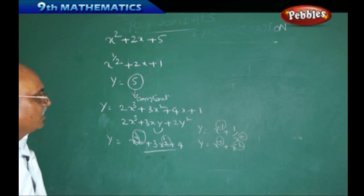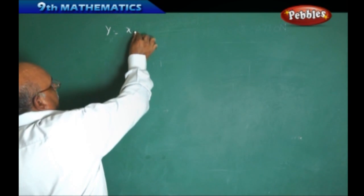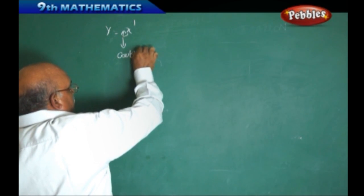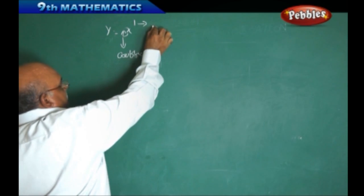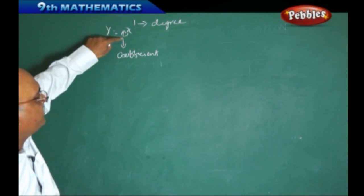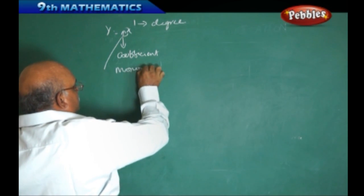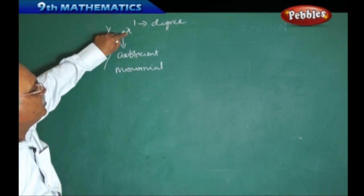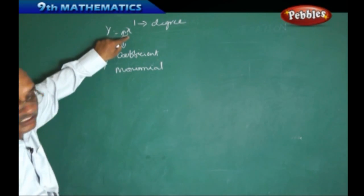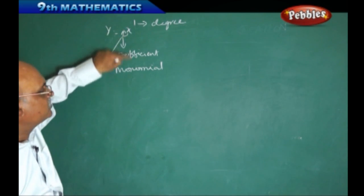Next we are going to talk about types of polynomials. Suppose y equal to x — here the power of x is 1 and the coefficient of x is 1. This is called a monomial, or we can also call it a linear polynomial. Since the power of x is 1 and it consists of only one term, we are calling it a monomial.